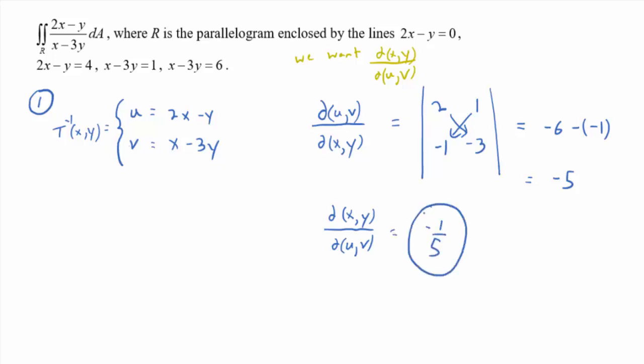Now, what do we want? The derivative, or the Jacobian, sorry, of x and y with respect to u and v, and what would that be? Negative 1 fifth. And what do we have to remember when we plug that in as a factor in the integrand? Absolute value, right? Because it's involved in getting the correct area element. So it's not going to be negative. Area's not going to be negative here.